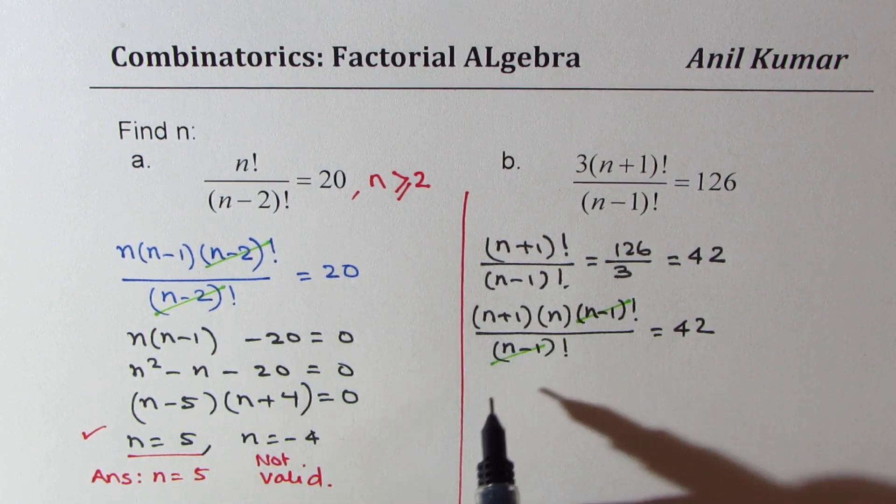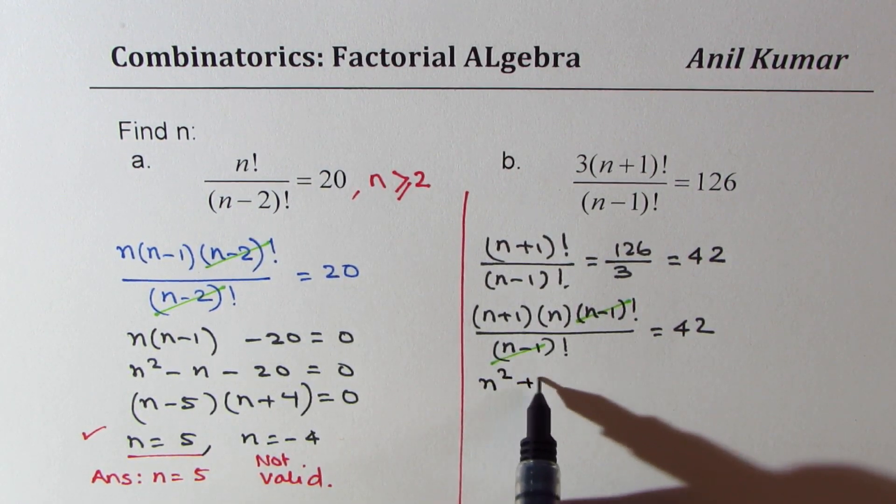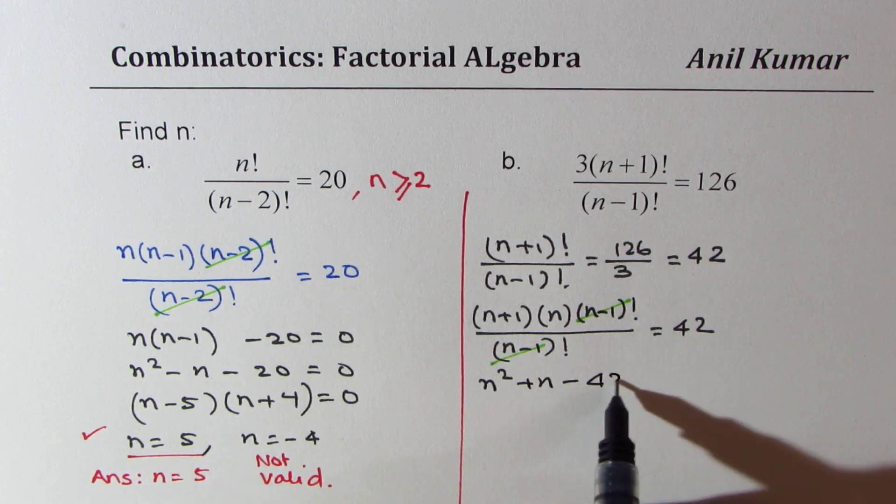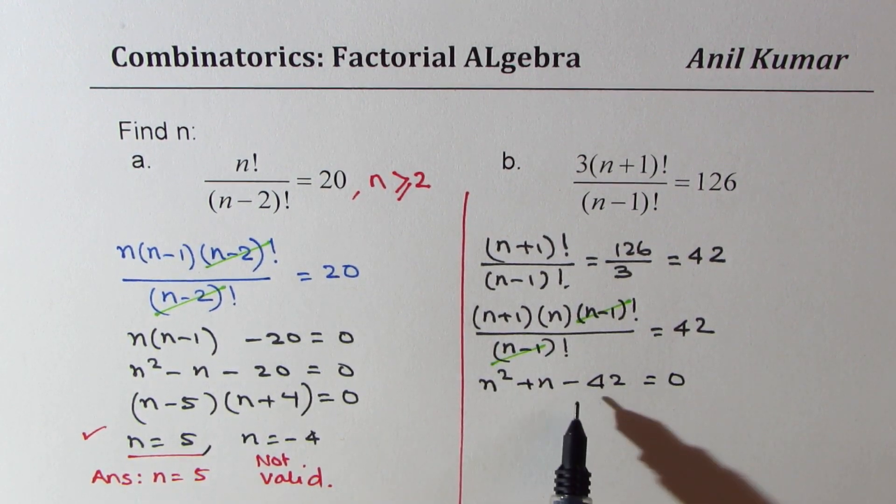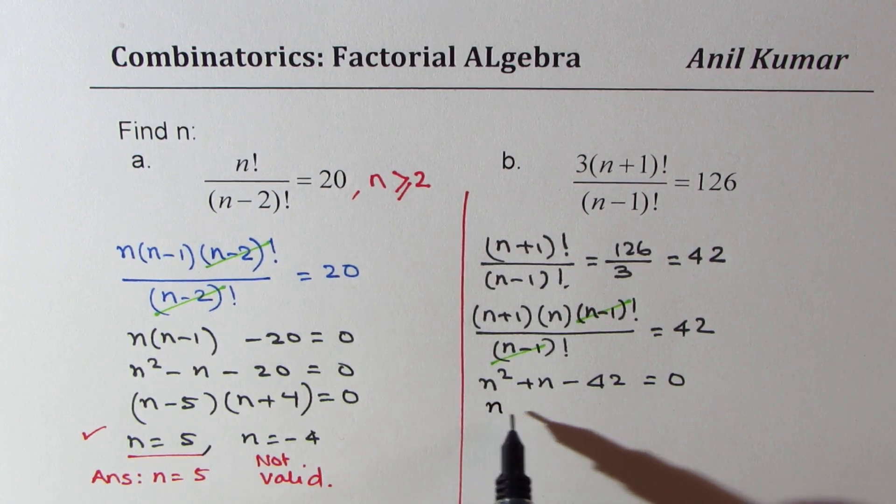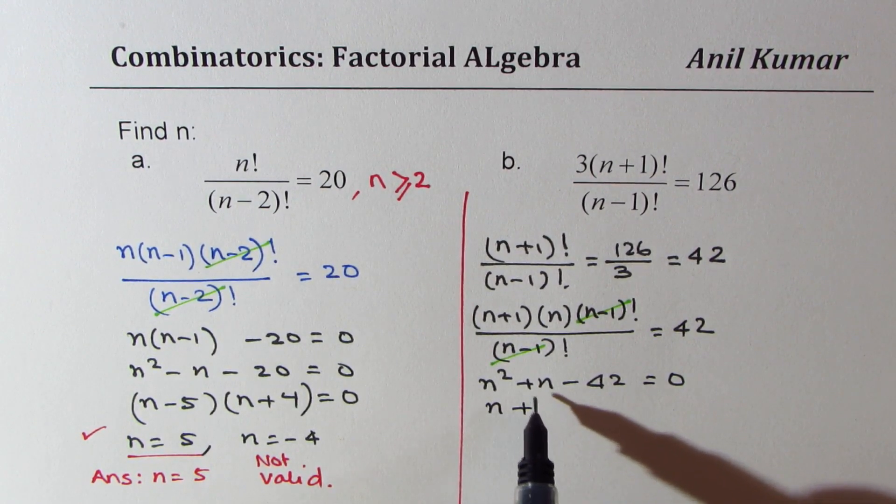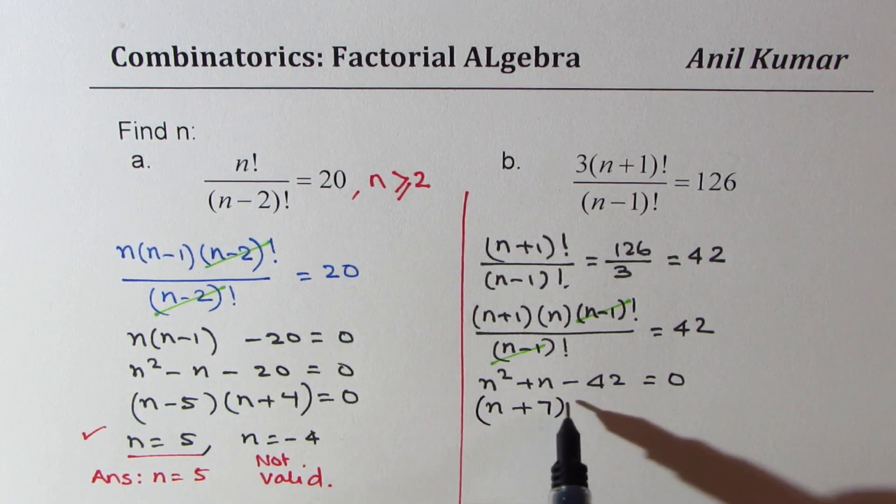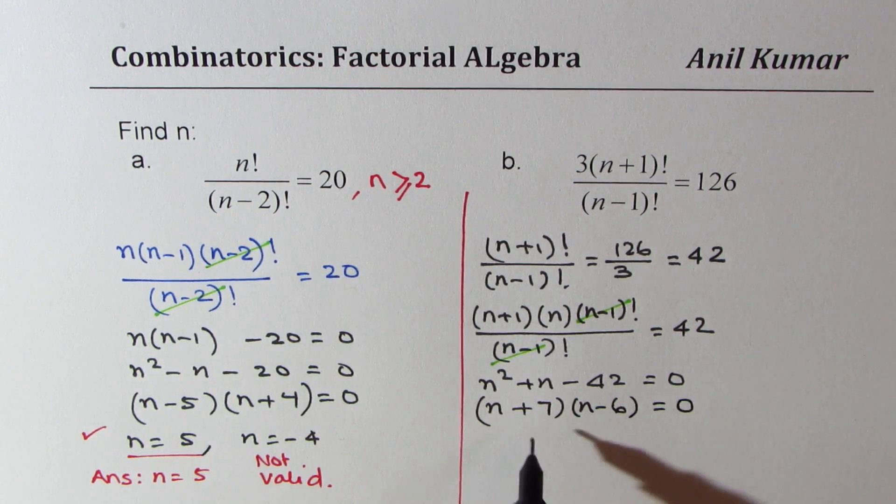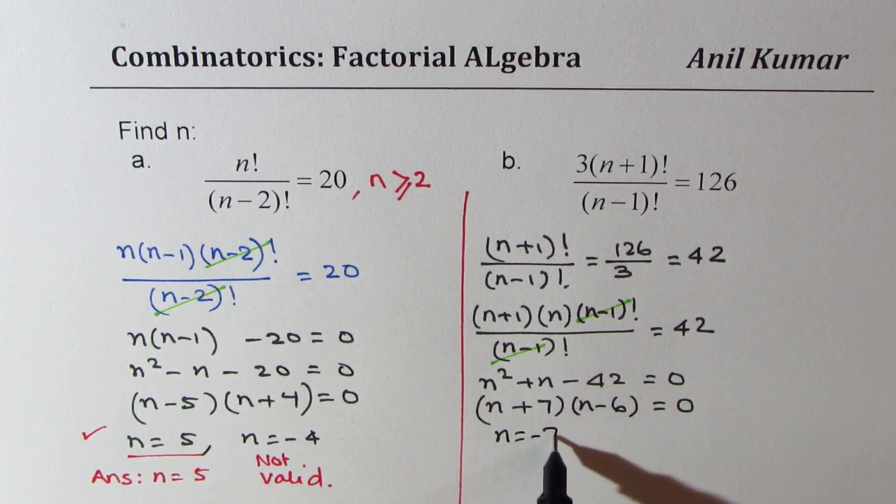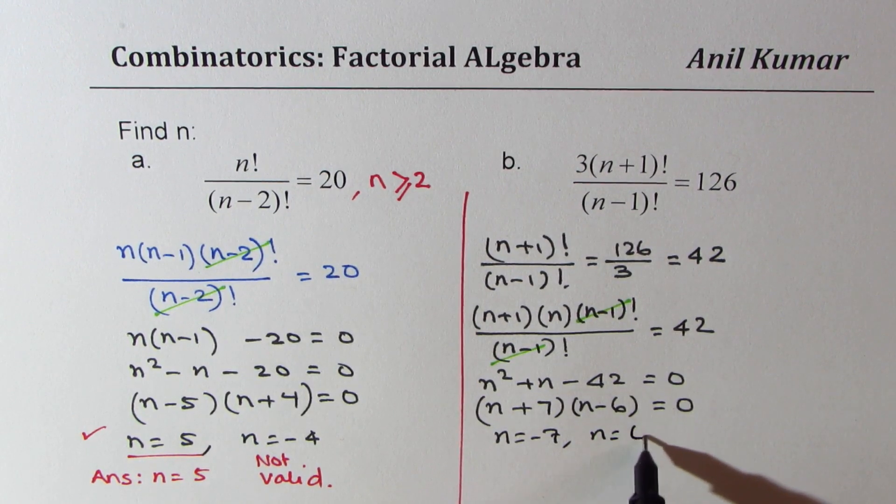Let's multiply these numbers. We get n² + n - 42 = 0. 6 times 7 is 42, so we get (n+7) times (n-6) equals 0. That gives us n equals minus 7 and n equals 6, and clearly the right answer is n equals 6.